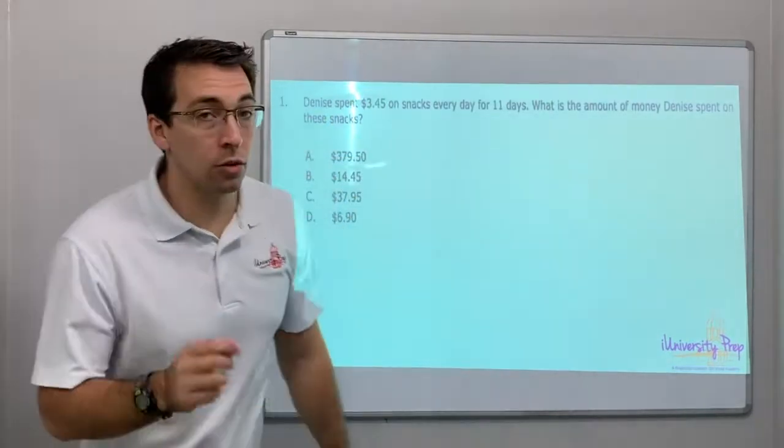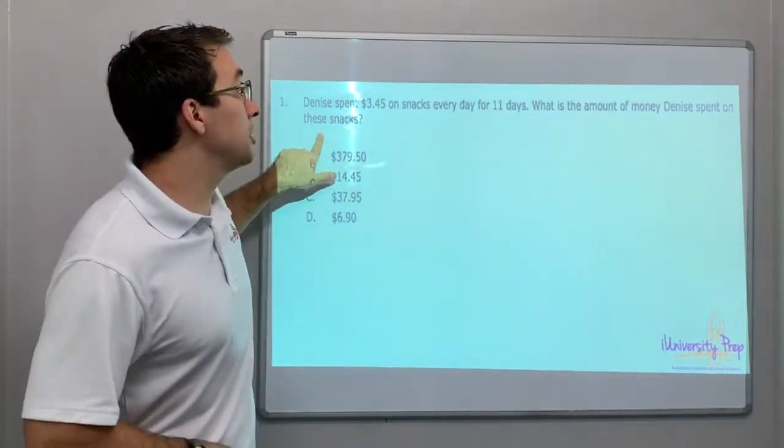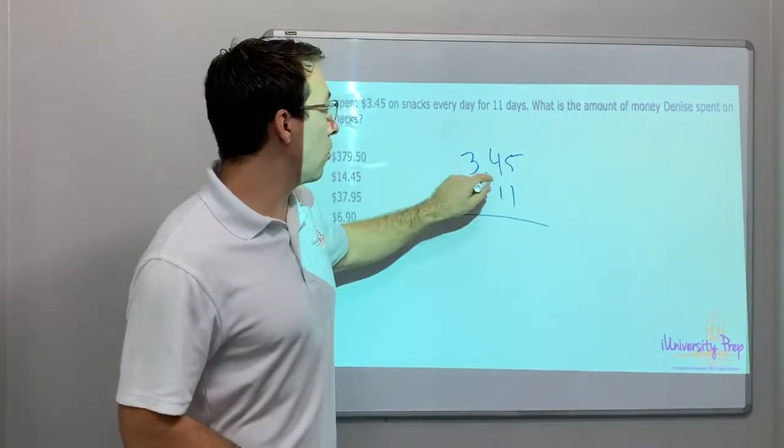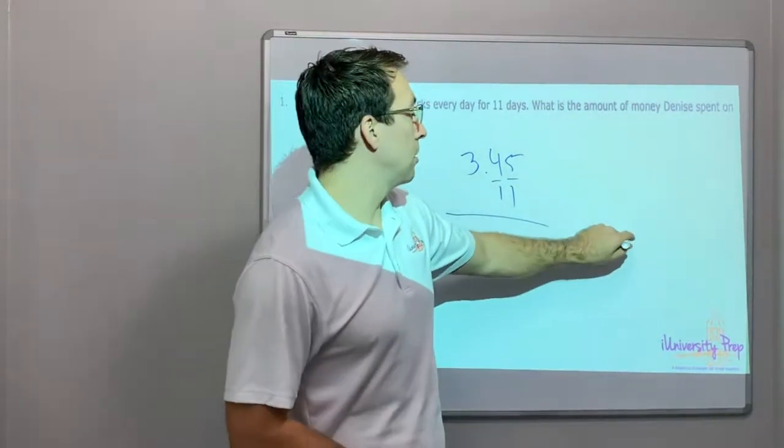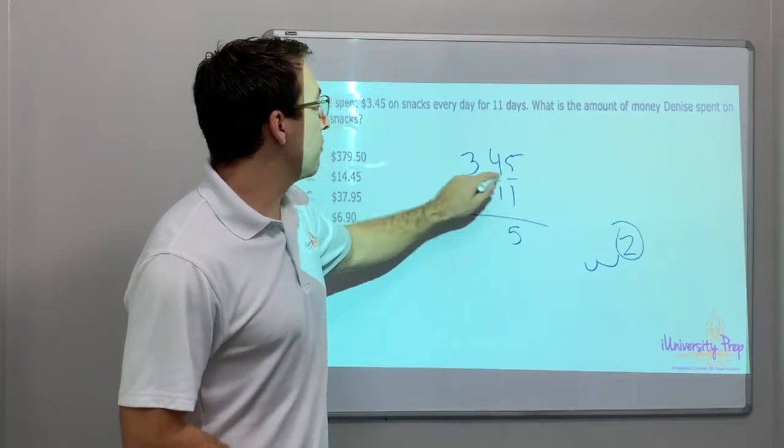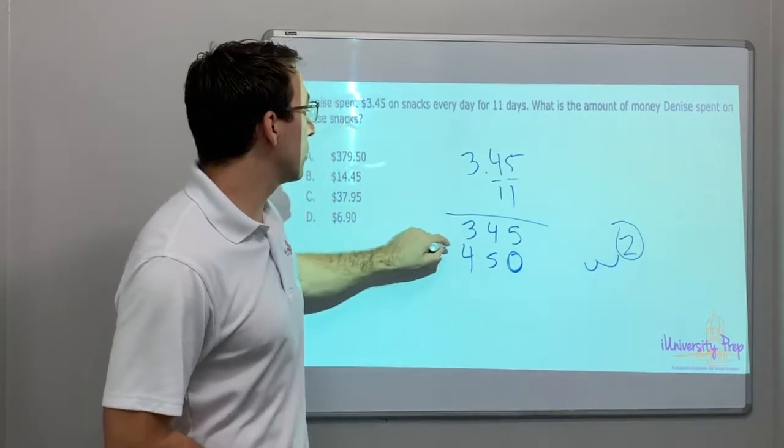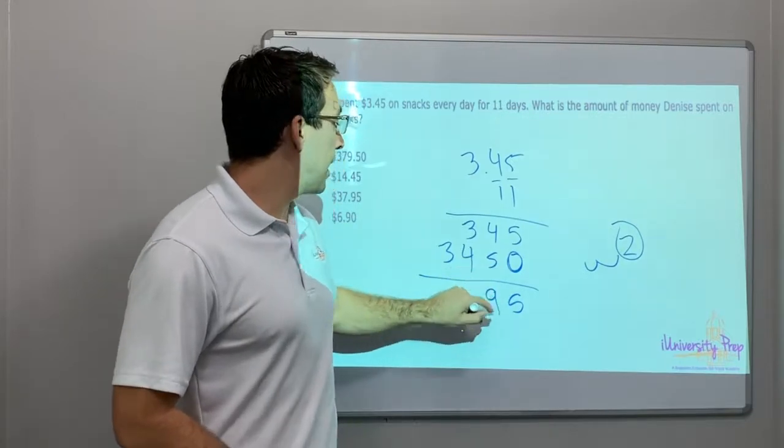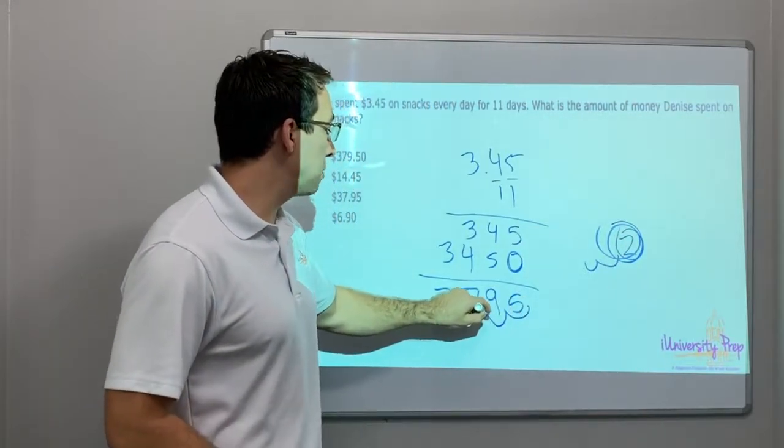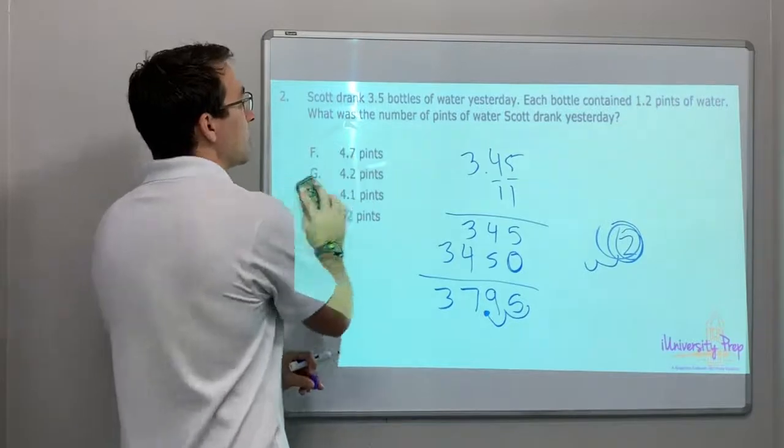Denise spent $3.45 on snacks every day for 11 days. What is the amount of money she spent? 3.45 times 11. Look, there's going to be two decimals in our answer. One times five is five, one times four is four, one times three is three. Add a zero. One times five is five, one times four is four, one times three is three. 5, 9, 7, 3. Two decimals, so we go one, two. She spent $37.95 on snacks in 11 days.